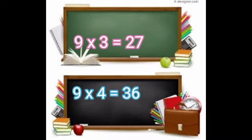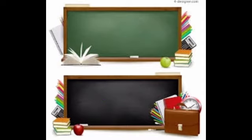Nine threes are twenty-seven. Nine fours are thirty-six.